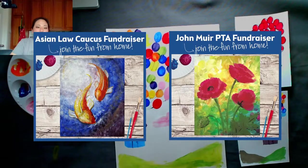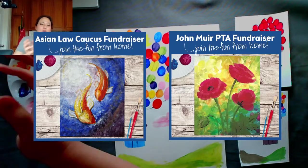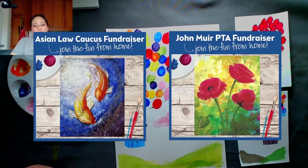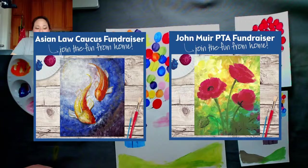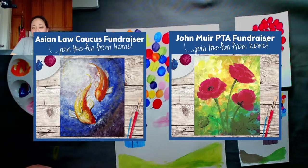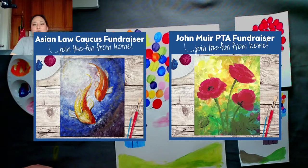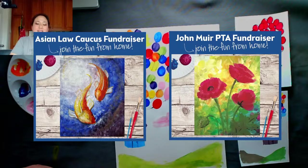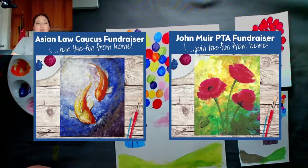So we are doing a fundraiser for the Asian Law Caucus this weekend. We're going to be painting these lovely koi moon, these little koi fish. And twenty percent of all of the sales go straight to the Asian Law Caucus. And we are also doing a PTA fundraiser on May 1st. So we're going to be painting these lovely poppies. And again, twenty percent goes straight to them. So thank you for joining me today.